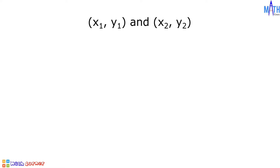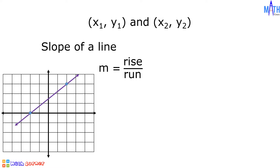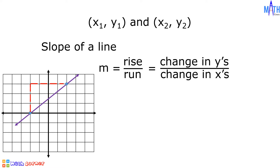Let us consider two points in a Cartesian plane: (x1, y1) and (x2, y2). The slope of a line, denoted by the small letter m, is equal to rise over run. Let us consider a line in a Cartesian plane. The slope of this line is rise over run, where rise is the change in y and run is the change in x. The formula for finding the slope of a line given two points is m equals y2 minus y1, all over x2 minus x1.